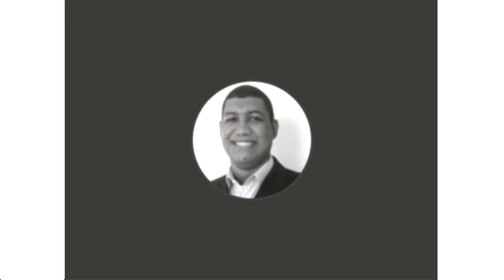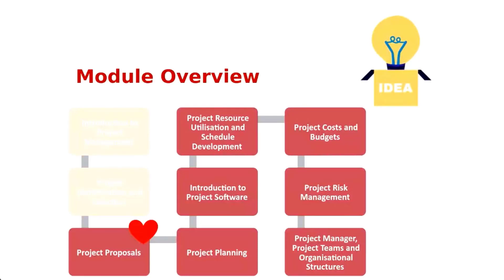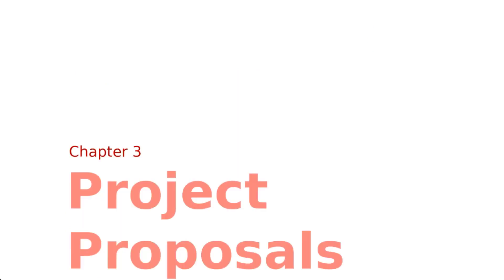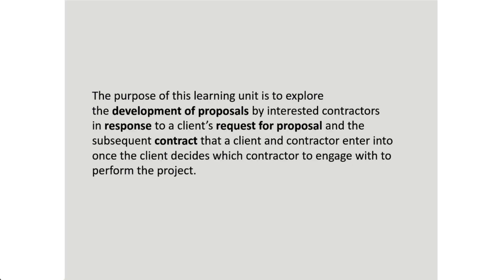Welcome back to project management. We are dealing with learning unit 3. Learning unit 1 covered understanding what is a project and describing a project. In learning unit 2 we went through project identification and understanding how to choose a project. In learning unit 3 we look at project proposals — how, once you've received a request for proposal, you've presented your project charter and the client has come back to say send me a proposal because they're interested in what you want to do. This chapter deals with understanding how to put together your proposal and the important elements of a project proposal.